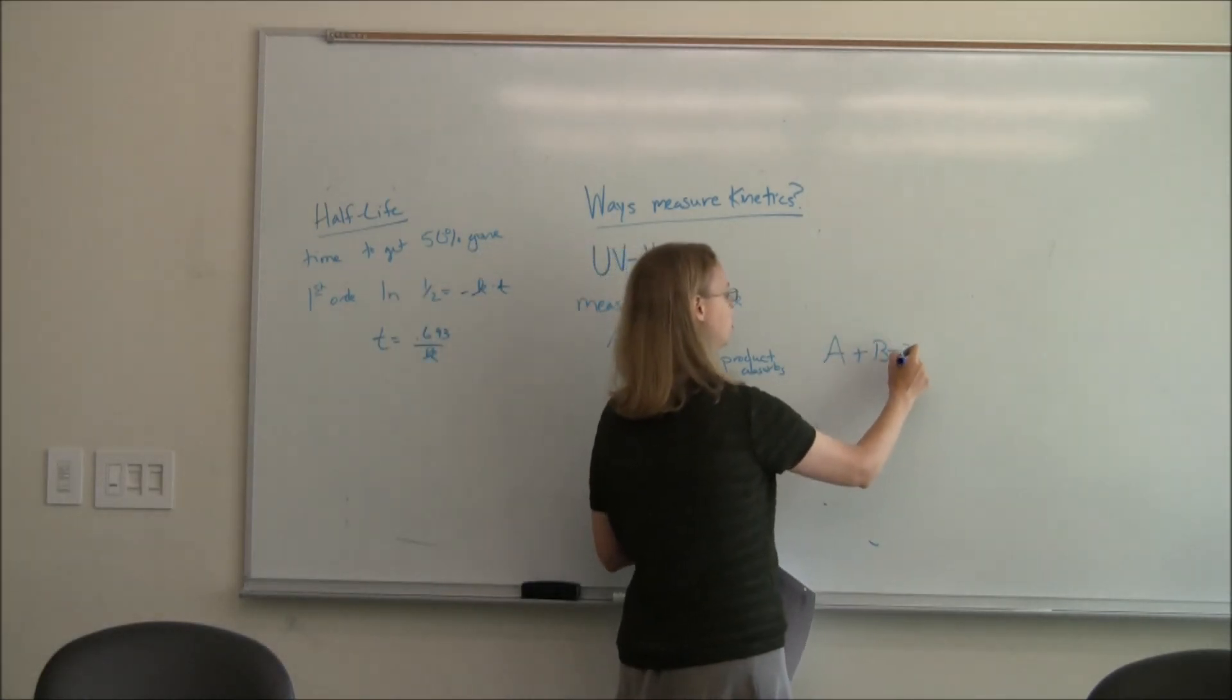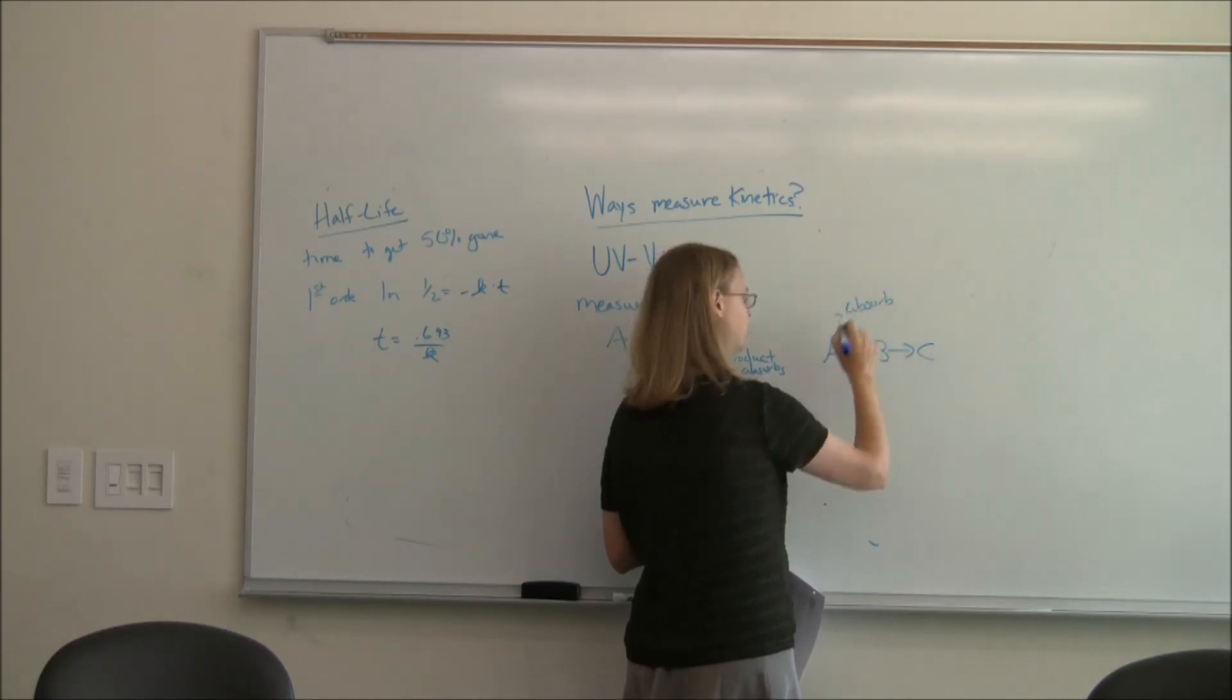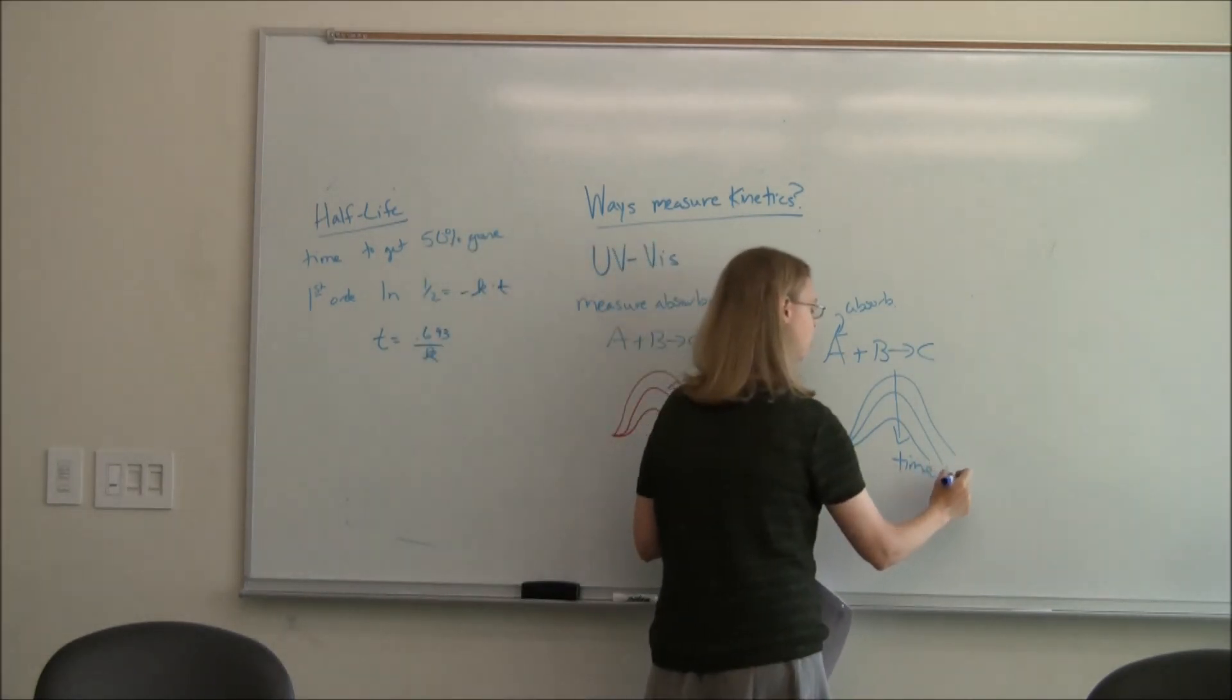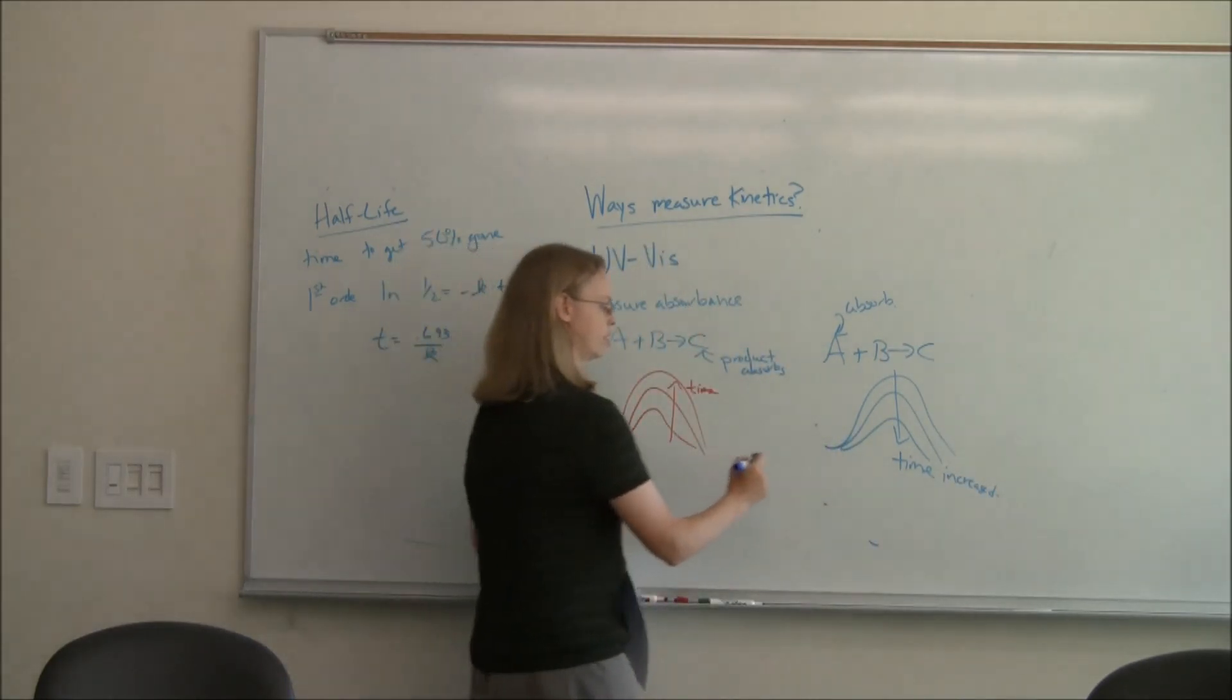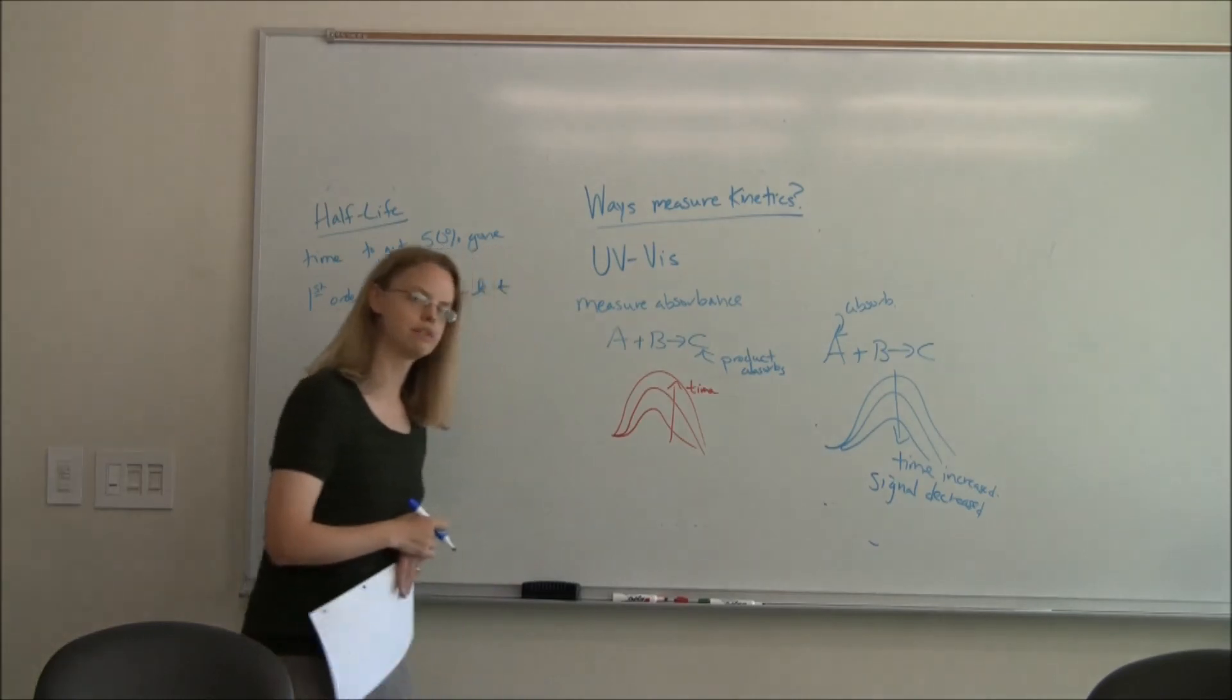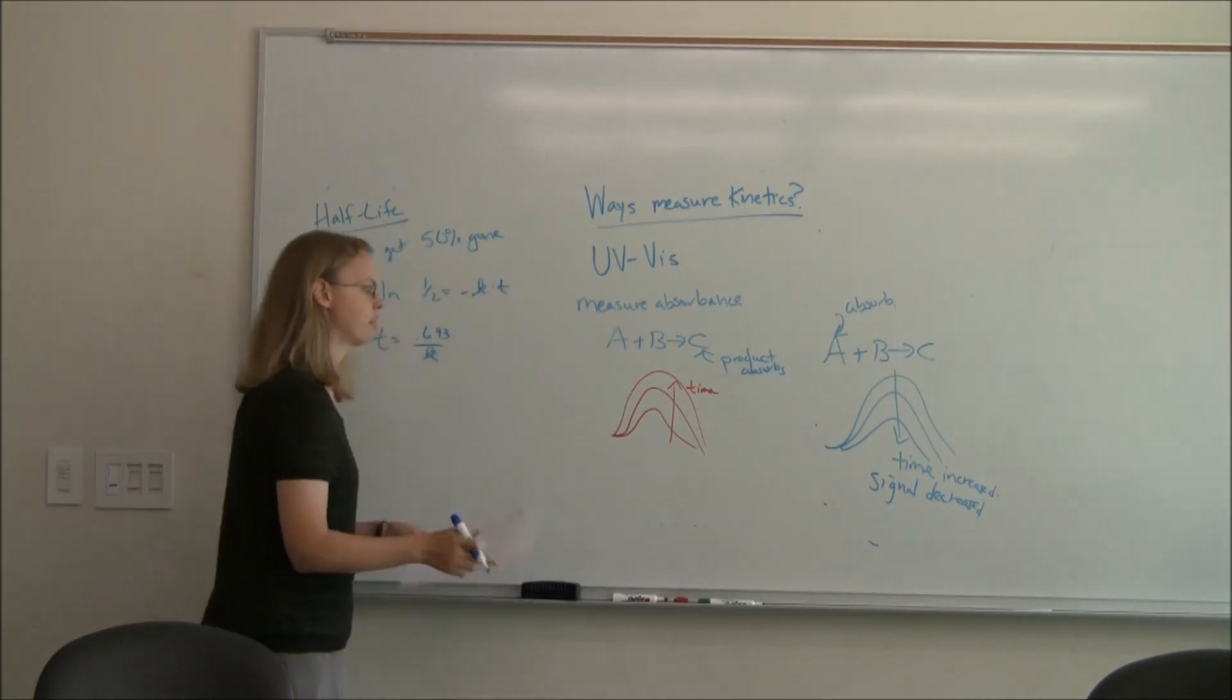But you could do this reaction where we would do A plus B goes to C, but now if A is the one whose absorbance we're monitoring, it would be, oh, that's time zero, and then over time, as time increases, the signal goes down. So as time increased, the signal decreased. So I don't want you to get in your head that you always have to see it go up. Lots of times when people are measuring kinetics, they're measuring the decay of something as well.